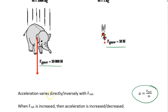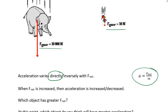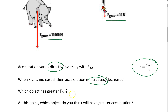Looking at this formula, acceleration varies directly with F net — if I make F net larger, then acceleration is going to get larger. So looking at these two: the F net of the elephant — there's only one force — it is 10,000 newtons, which is much greater than that of the mouse. So I'm thinking maybe the elephant's going to win. When F net is increased, the acceleration is increased. The elephant quite certainly has much greater F net, so which object will have the greatest acceleration?